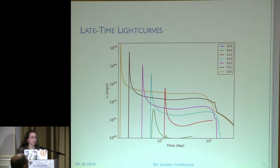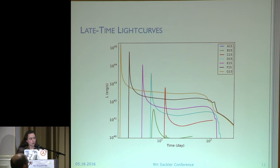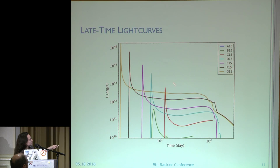These are the late-time light curves, calculated using Kepler. These are the standard energy ones; these are the later ones — again on a log axis with days. You can see they look like regular supernovae; they're just really dim. If you want to catch these, the shock breakout is really the time you want to go looking for it.